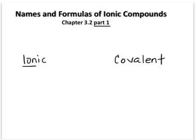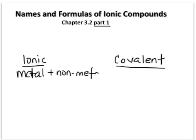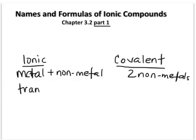Let's review what we've already talked about. In chapter 3, section 1, we talked about the difference between an ionic and covalent bond. An ionic bond occurred between a metal and a non-metal, and a covalent bond occurred between two non-metals. Ionic compounds forming an ionic bond will transfer electrons, whereas in a covalent bond, they will share electrons.